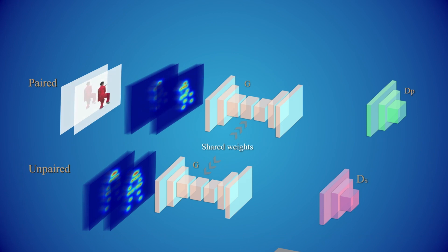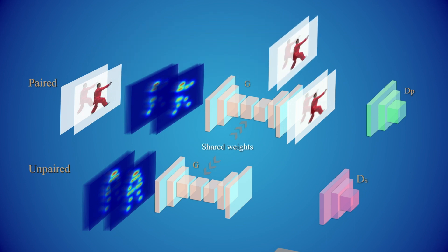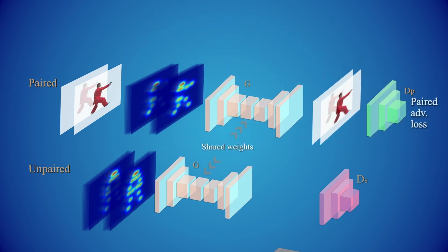Given a reference video and its corresponding poses, we first train our network to map the poses back to their original frames. This operation is done by a reconstruction loss along with adversarial loss for paired data.